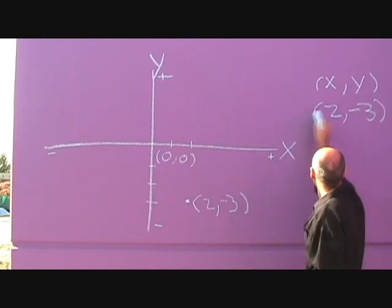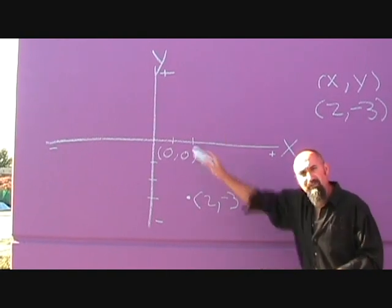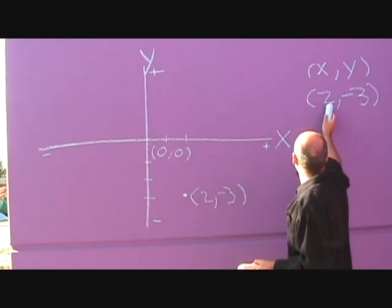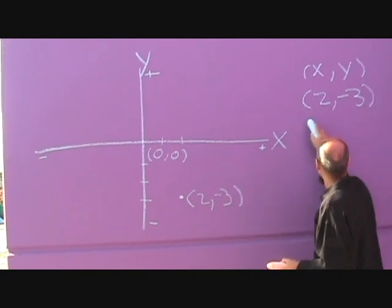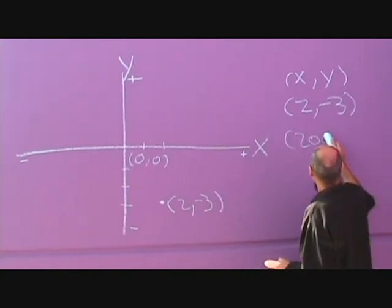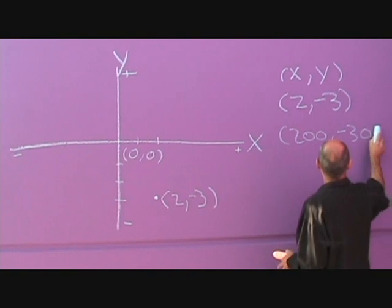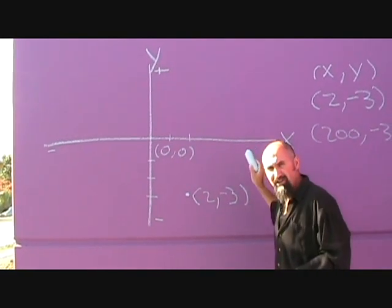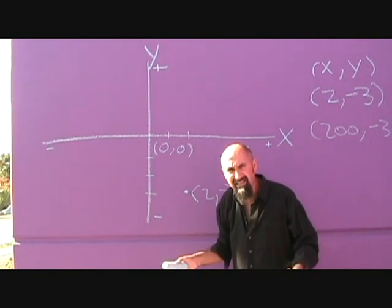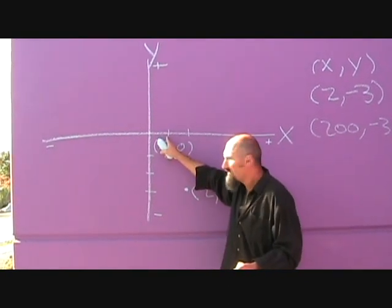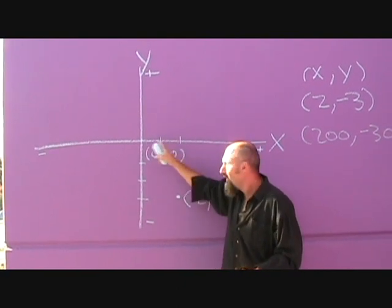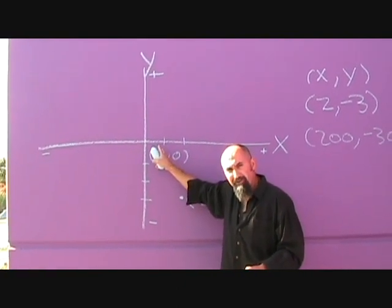And you can do this coordinate system on any points that they give you. You can place it on a map. Now, if they start talking about coordinates of 200 and negative 300, well, you're not going to sit there and do little ticks every point. So, it's up to you what kind of scale you put things on. So, instead of making this a 1, you could make this 100 and make this one 200.